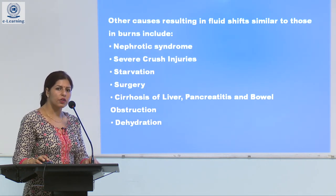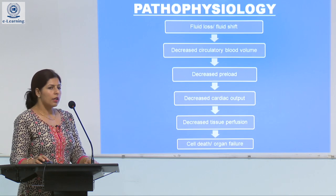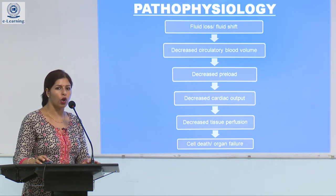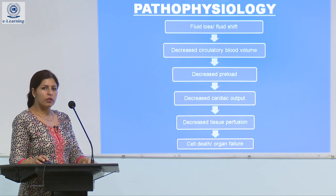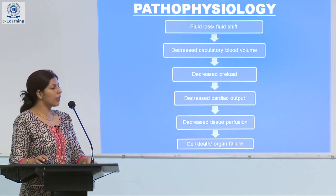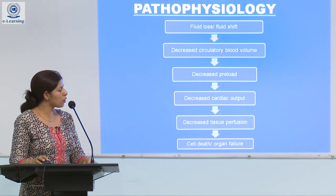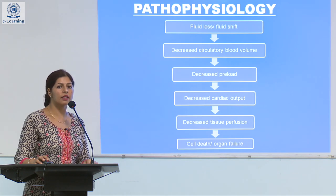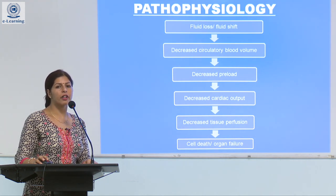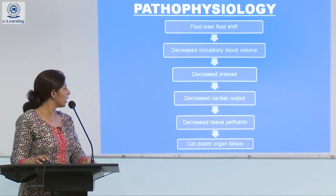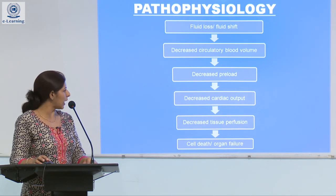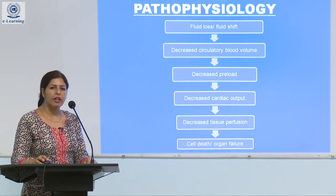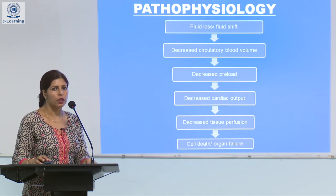Now, if fluid loss or fluid shift has occurred, how would it lead to shock? Fluid loss or fluid shift due to any reason will result in decreased circulatory blood volume. It will further lead to decreased preload. Preload is end-diastolic volume — if the heart is not receiving adequate venous blood, it will not pump sufficient arterial blood to the rest of the body. Decreased preload leads to decreased cardiac output, which will further affect tissue perfusion, and cell death or organ failure may occur. This is the pathophysiology common to all types of shock.